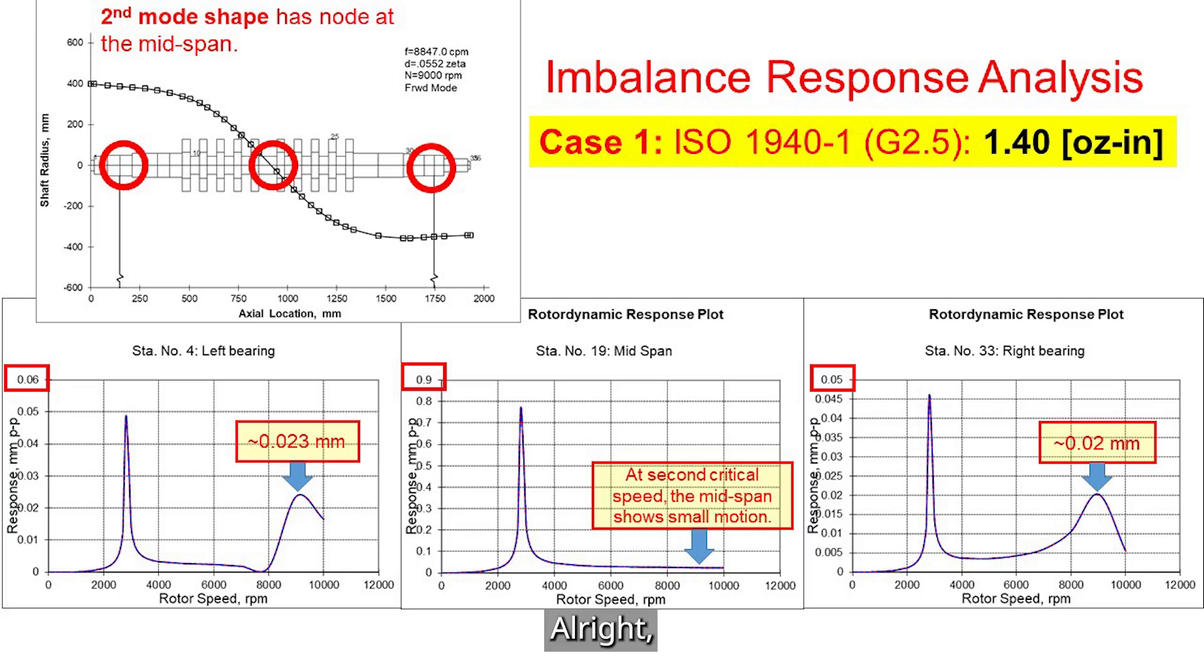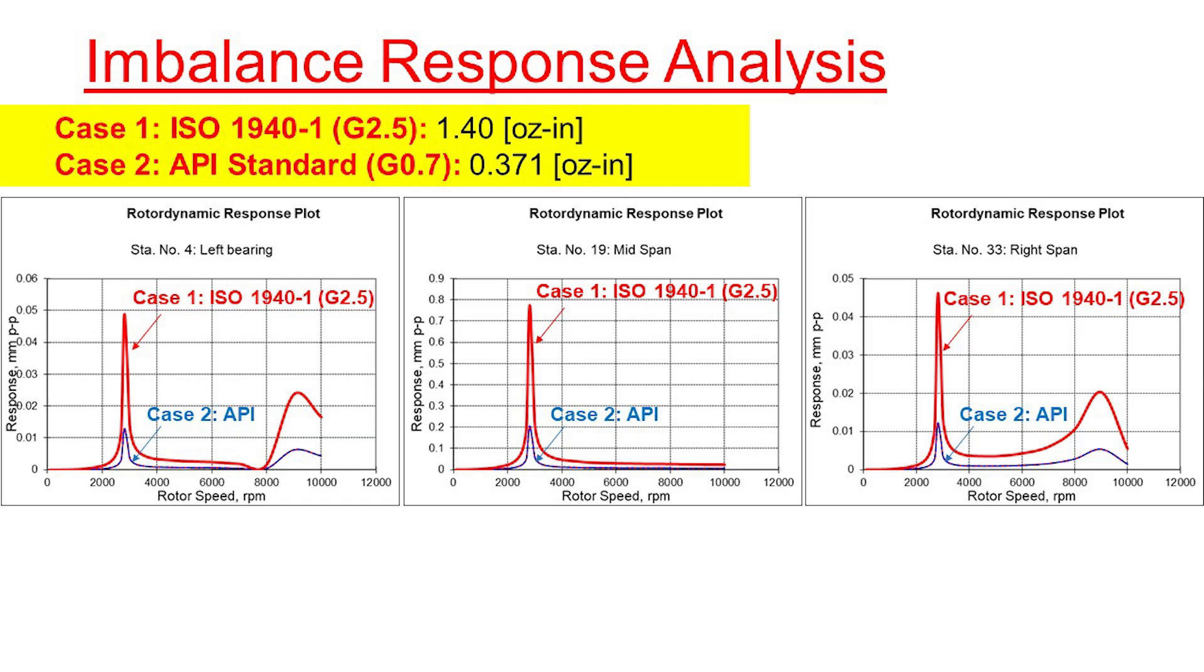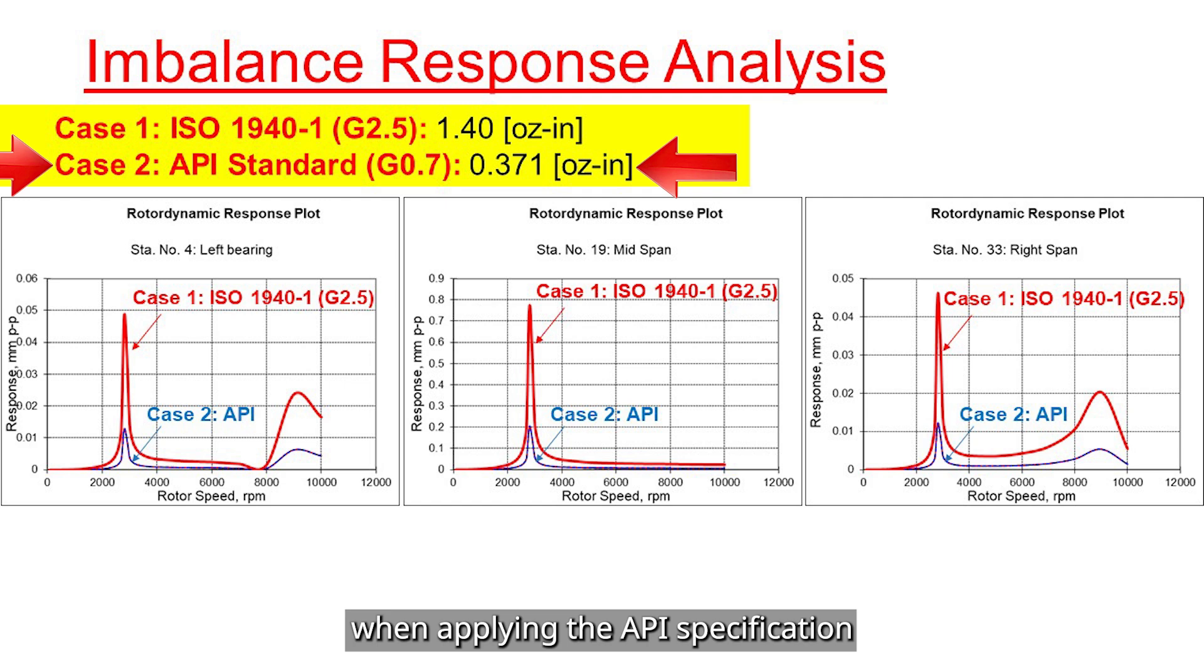Alright, now let's take a look at case 2 for the imbalanced response analysis. In comparison, here is the response when applying the API specification, which is equivalent to ISO grade G0.7. As expected, the vibration amplitudes are lower with the API spec due to its tighter balance tolerance. As you can imagine, the greater the imbalance in the rotor assembly, the higher the vibration levels will be.